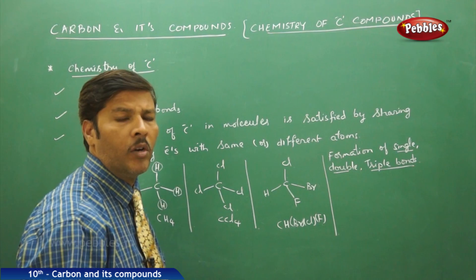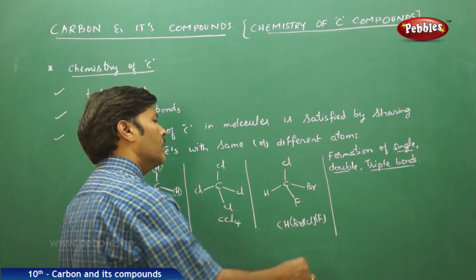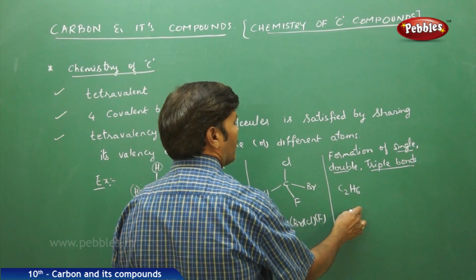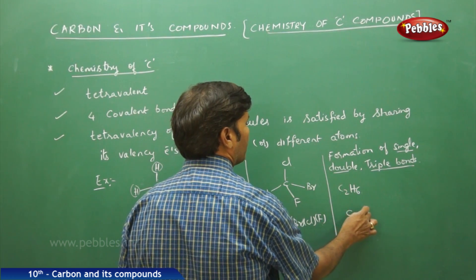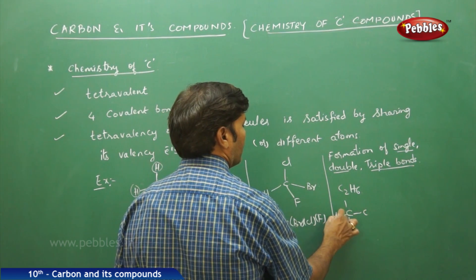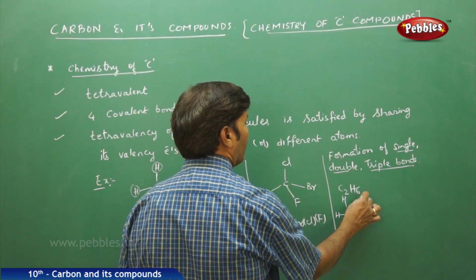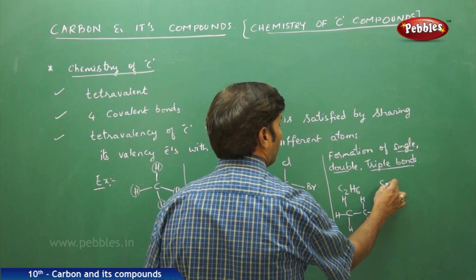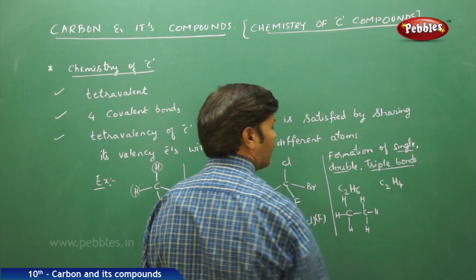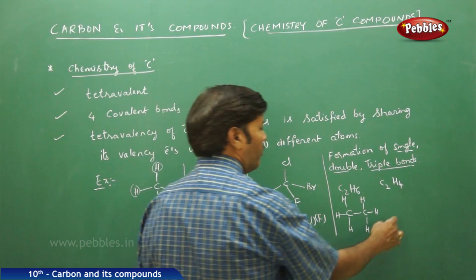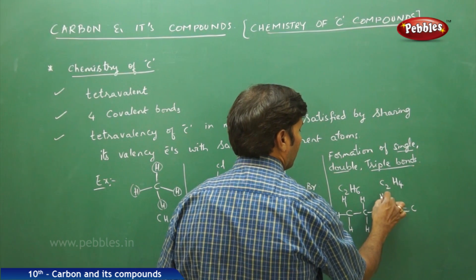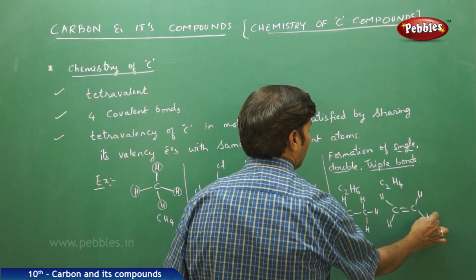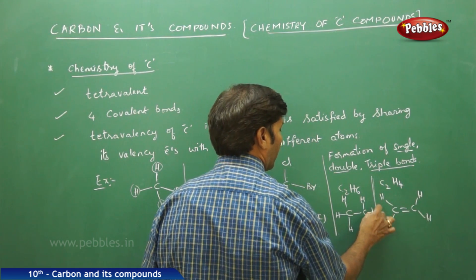If you take a single bond, carbon can form a single bond between two carbon atoms. For example, C2H6 — ethane — it forms a single bond between the two carbons. If you take ethylene or ethene, C2H4, it forms a double bond between the two carbons and single bonds between carbon and hydrogen.